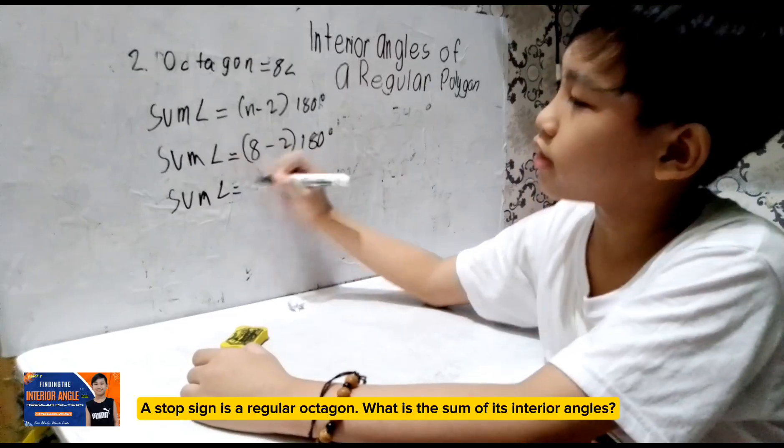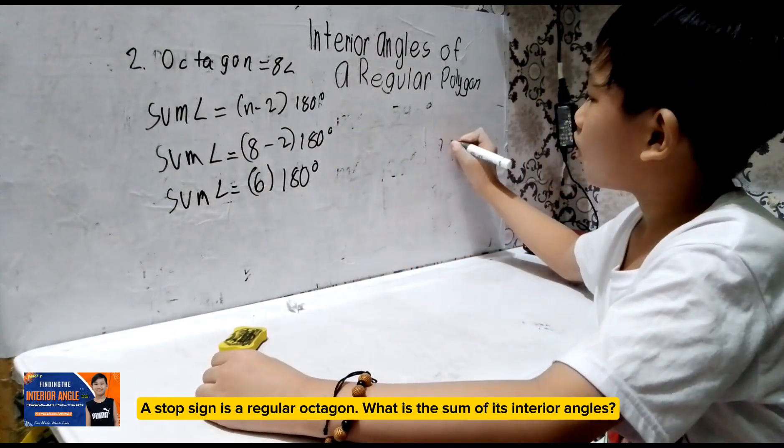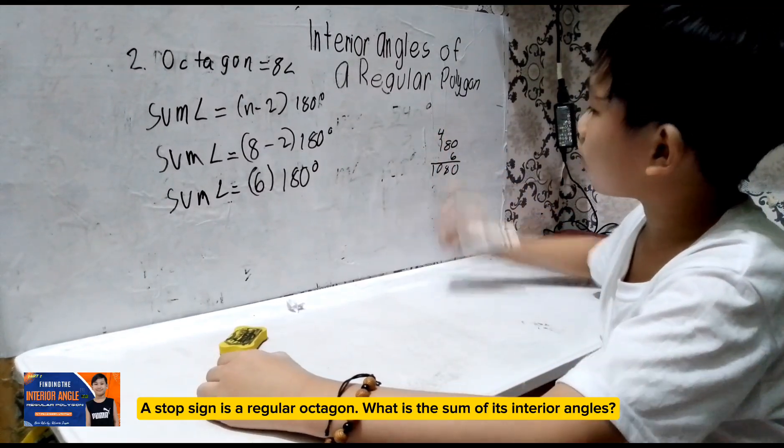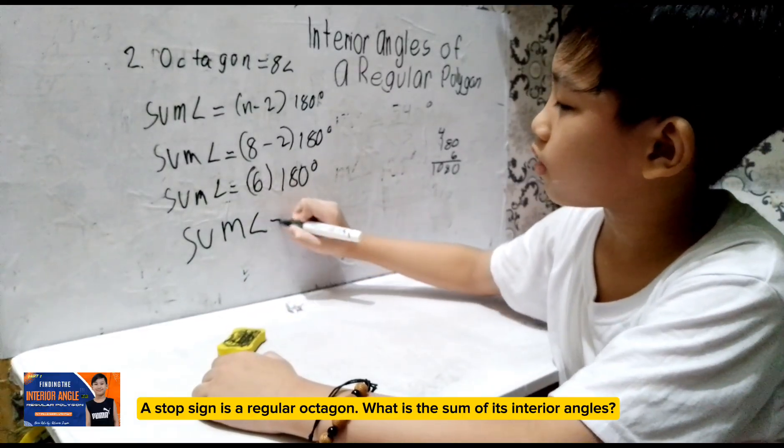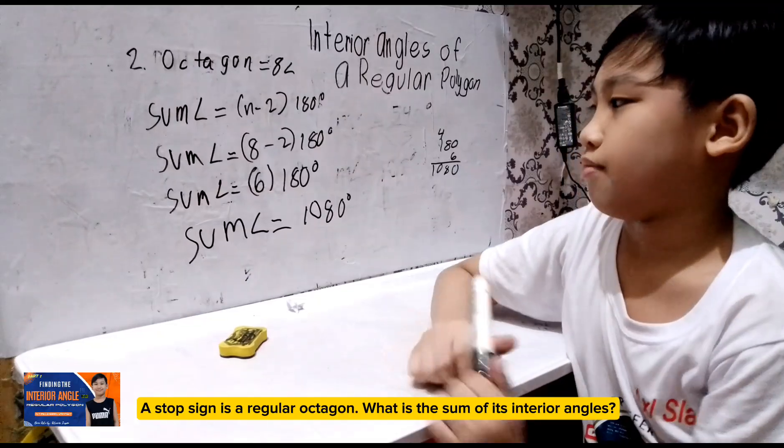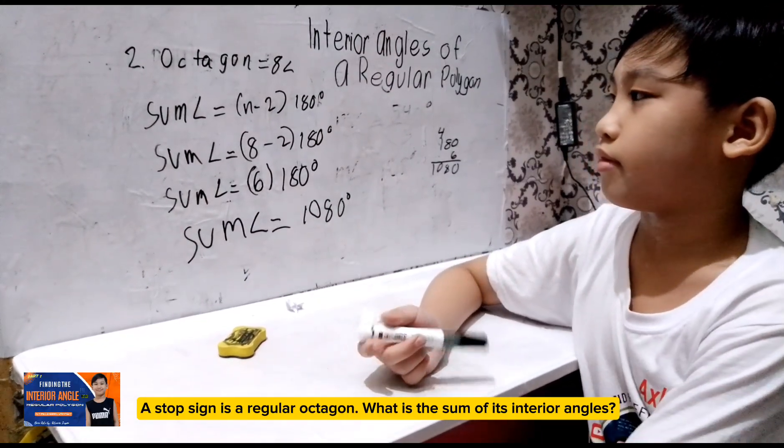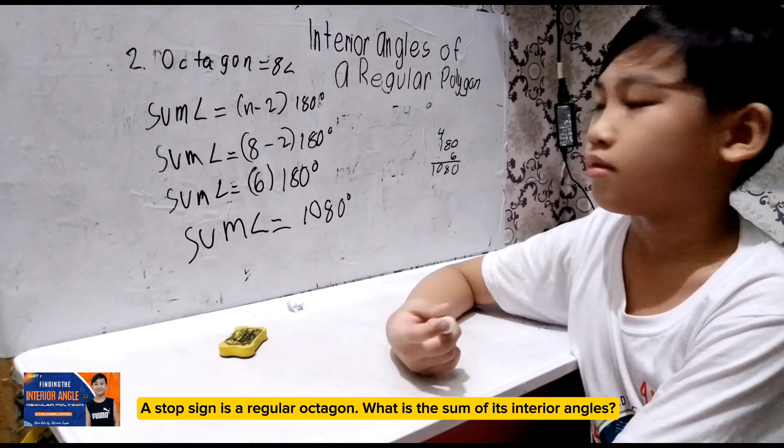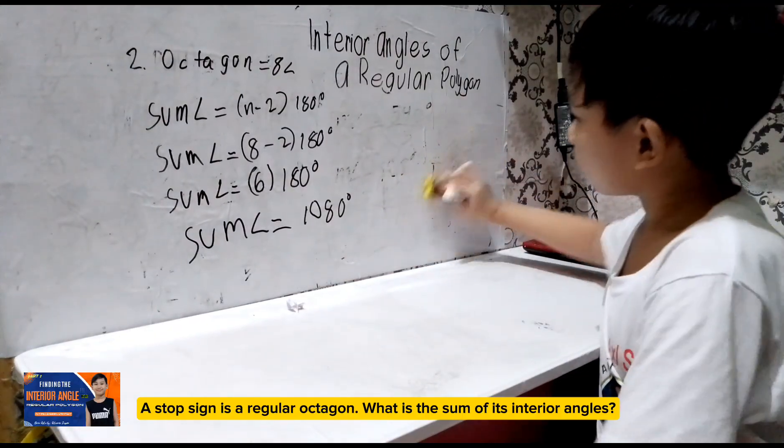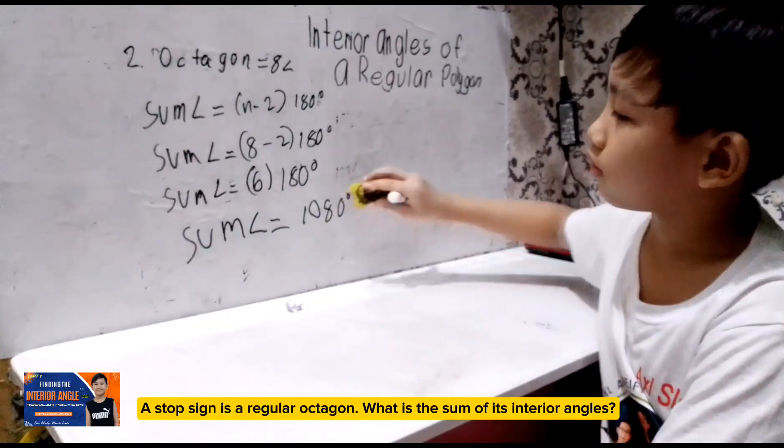Sum, let's subtract 6 multiplied by 180 degrees. 180, 6, 0, 48, 10. So, sum equals 1,080 degrees. Okay, since we are asked to find the sum of the measurement of the interior angles, we use the formula sum of the angles is equal to N minus 2 times 180 degrees. And then octagon has 8 angles. You have to substitute it with the formula. So, 8 minus 2 is equal to 6 and then multiply it by 180 degrees and you got 1,080 degrees. Very good.